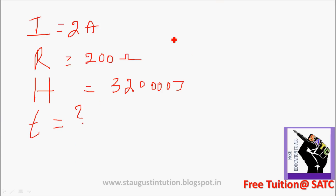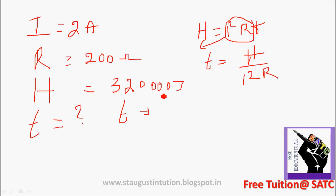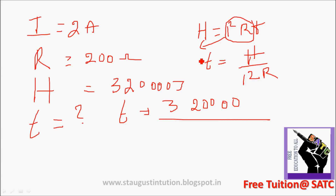Heat is equal to I² R T. So time is equal to heat divided by I² R. That is equal to time equal to heat: 3,20,000 divided by I² R.